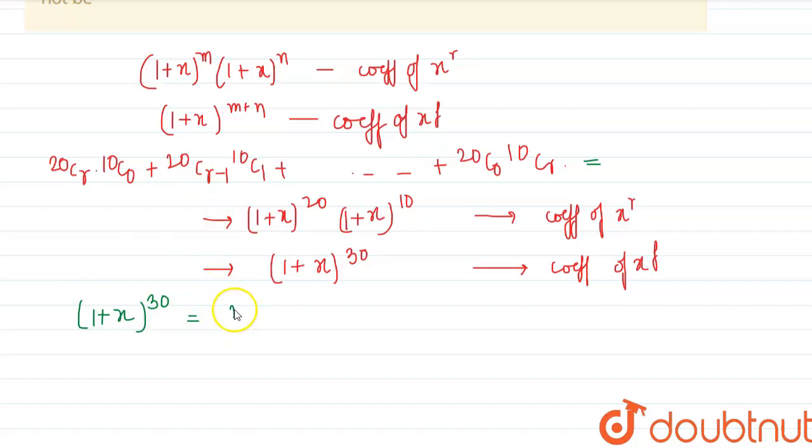The general coefficient is nCr, and we are finding for this expansion. So, this will be 30Cr and the value of r can be equal to n/2 for maximum.